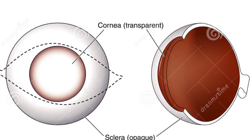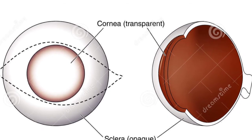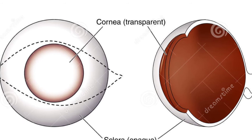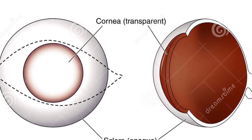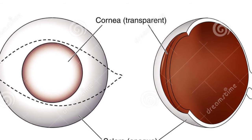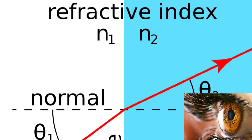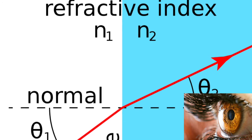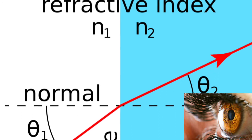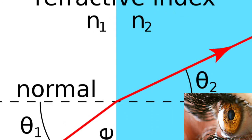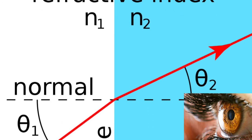So the net refractive power of the cornea is about 43 diopters, which is almost three-fourths of the total power of the eye. Last but not the least, the refractive index of the cornea is 1.37.